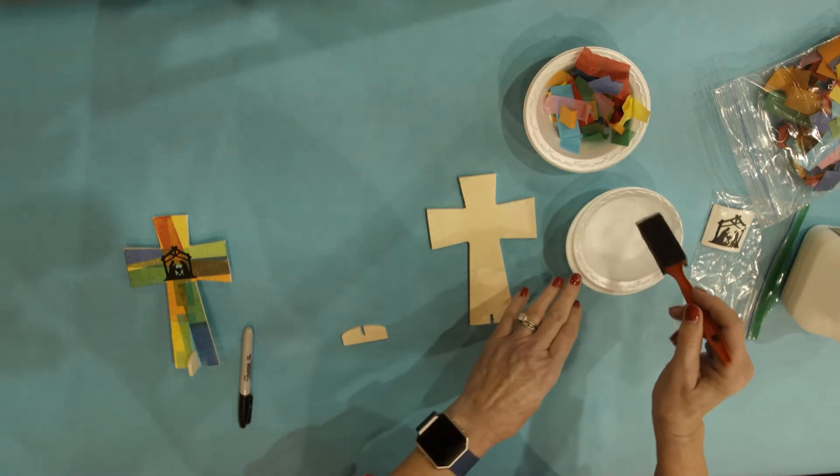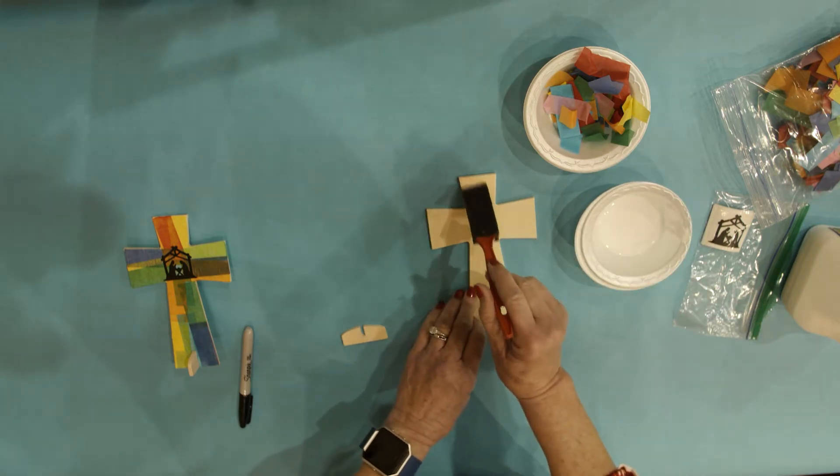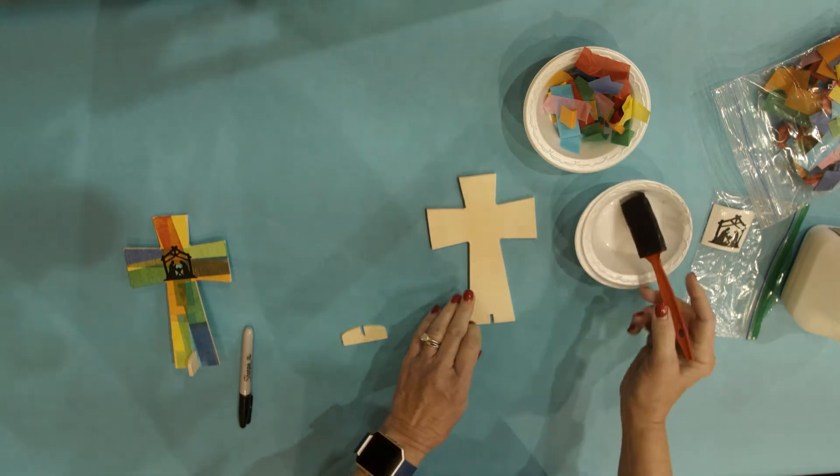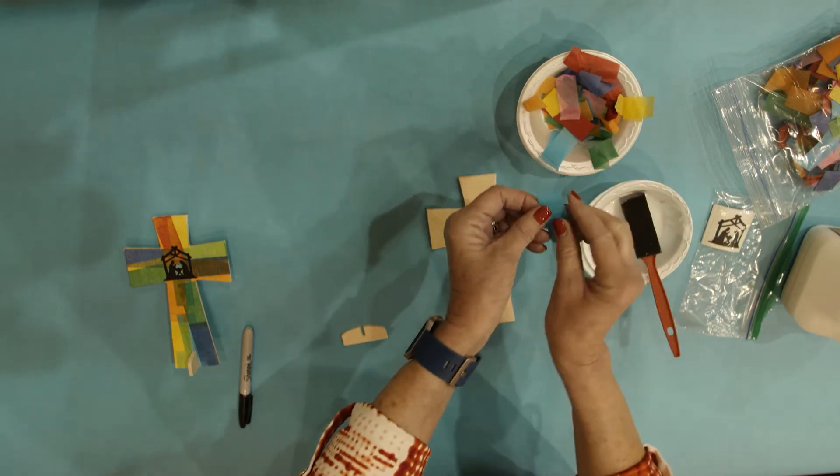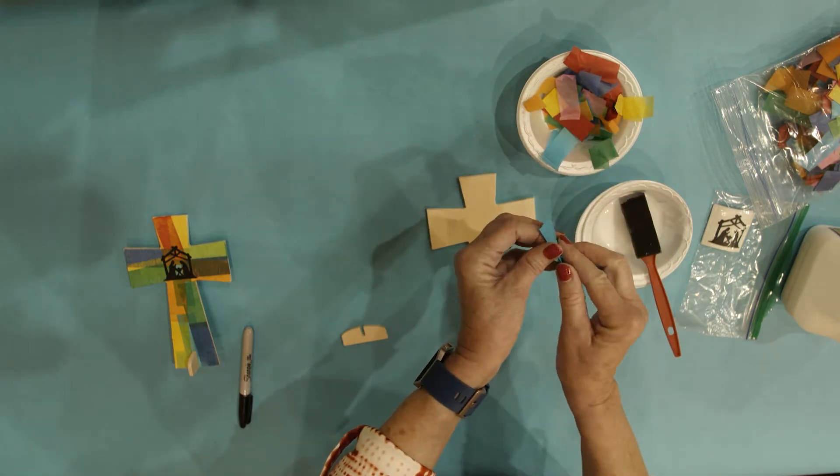You want to put the tissue paper so that it is right on the edge of the cross. They need a little help matching that up.